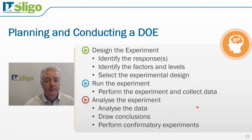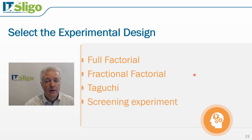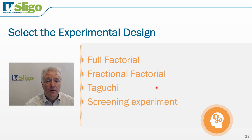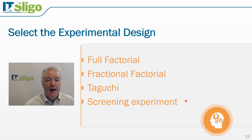We will next select the experimental design. There are a number of experimental designs that we can choose. The simplest one is the full factorial, where we run all combinations of factor levels. In the fractional factorial, we only run a specific subset of all the combinations that are possible — we cannot choose this subset at random. In Taguchi experiments, we use orthogonal arrays and signal-to-noise ratios. In a screening experiment, we evaluate a large number of factors in a small number of experiments, largely to identify which factors need further experimentation and which factors we can possibly ignore.